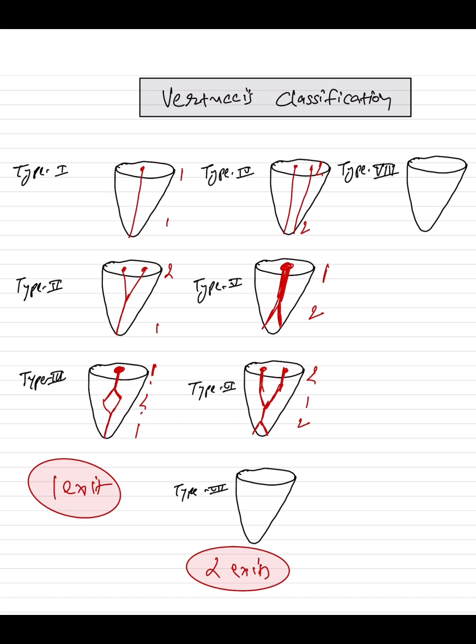In type seven we have a single canal which divides into two, then it joins into one, and then again it divides into two. So it is a one-two-one-two pattern. The last one is type eight. It has three exits and it also has three openings, so there are three separate canals in type eight. So this is the classification system given by Vertucci.